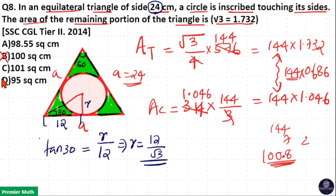Here, 100 is not an option, 101 is not an option, 95 is far away from 100. So 98.55 option A is your answer because this is nearly 68.6 percent of 144. 70 percent of 144 is 100, so 68.6 percent of 144 is nearly 100. So option A is your answer.